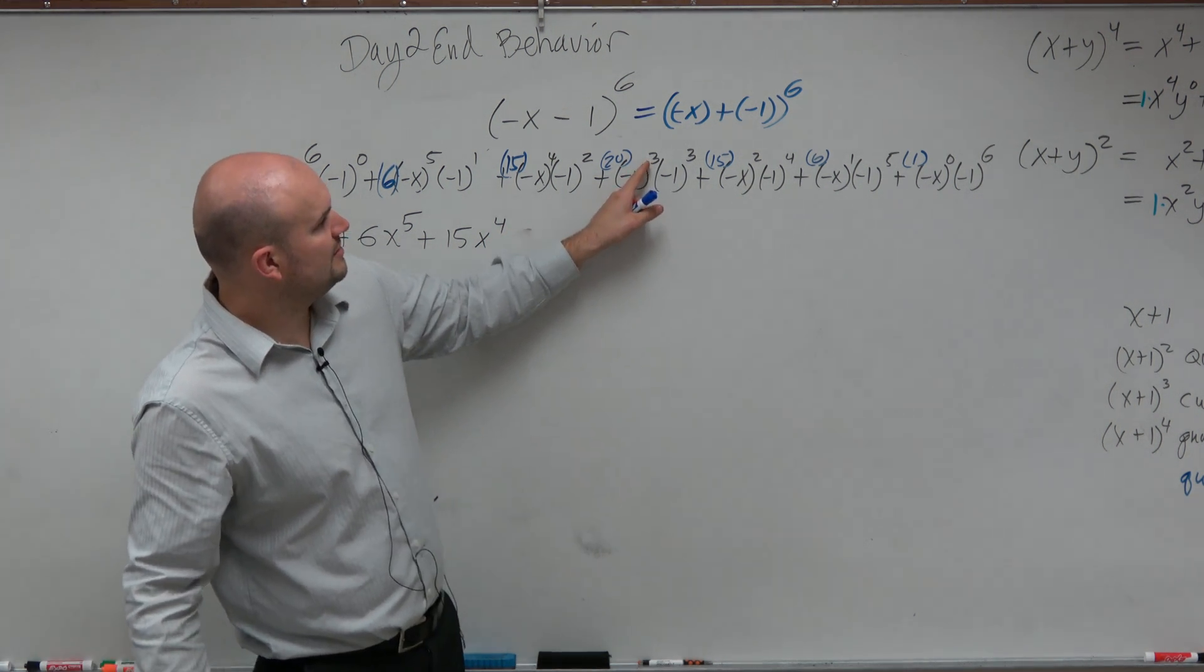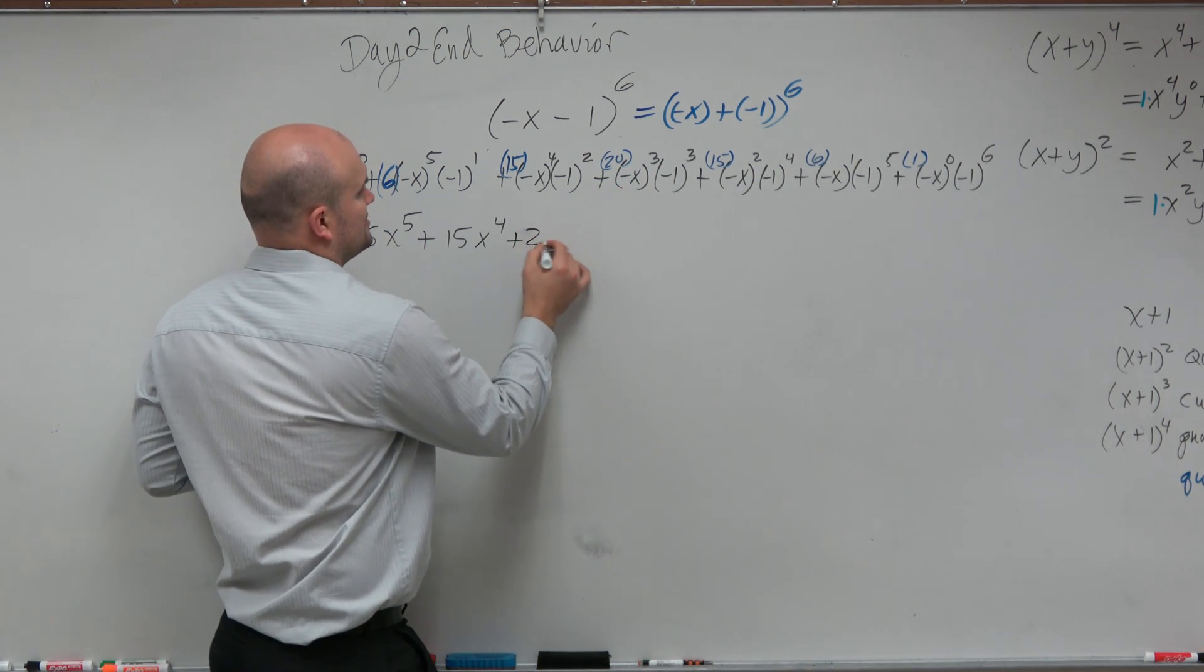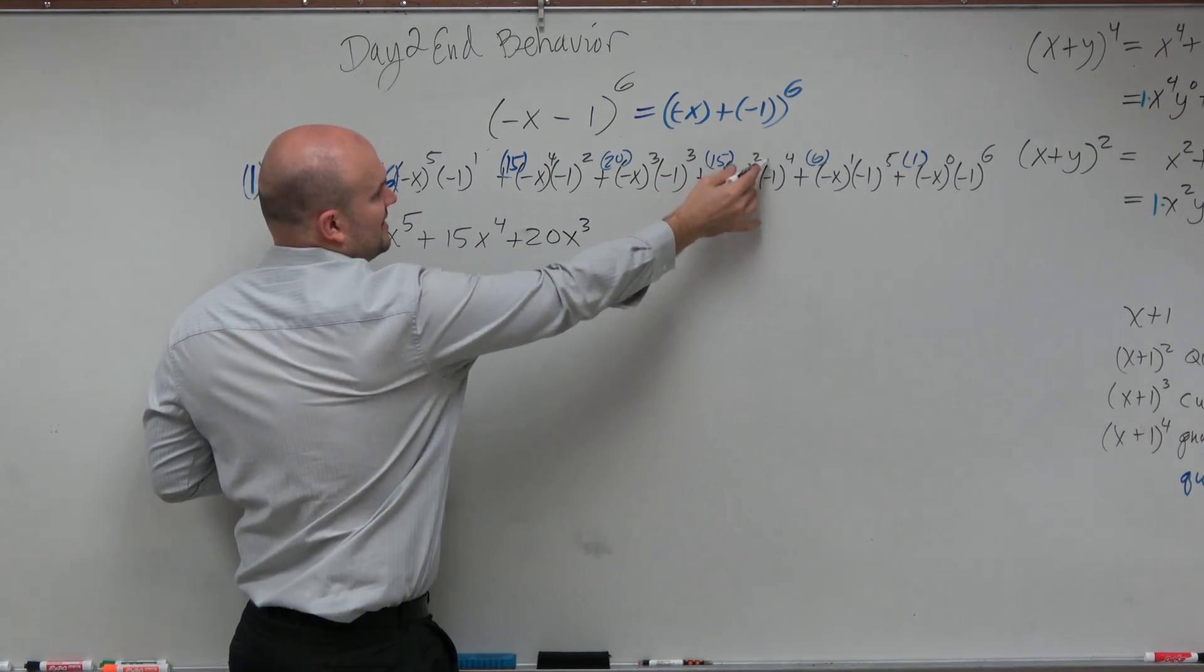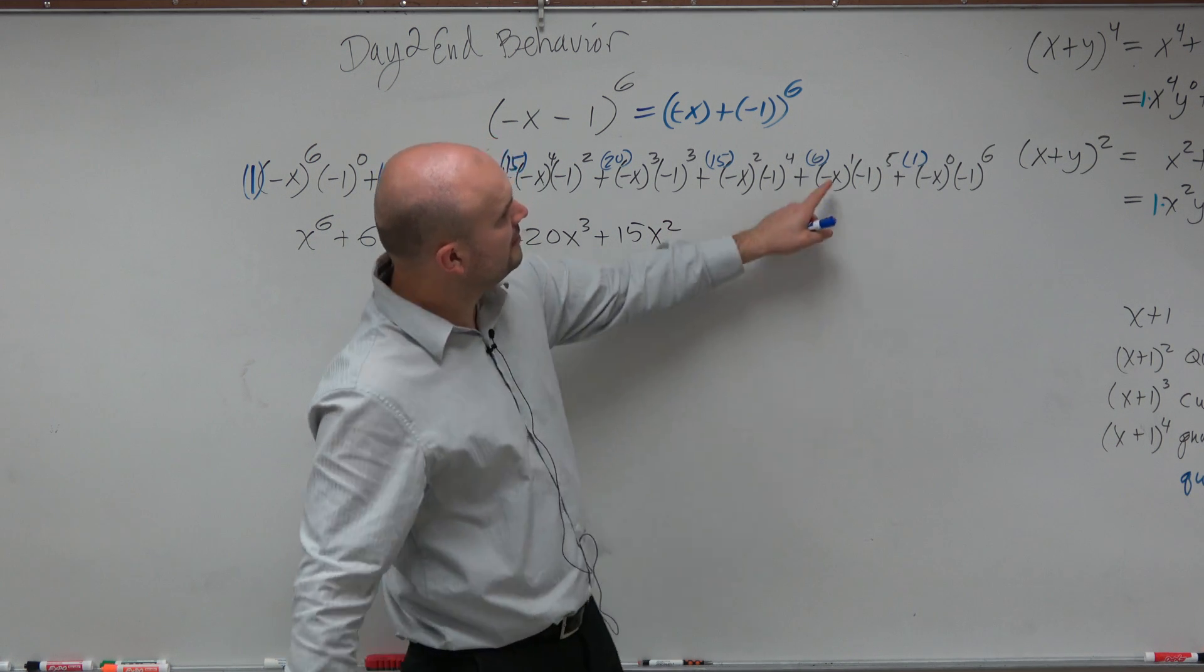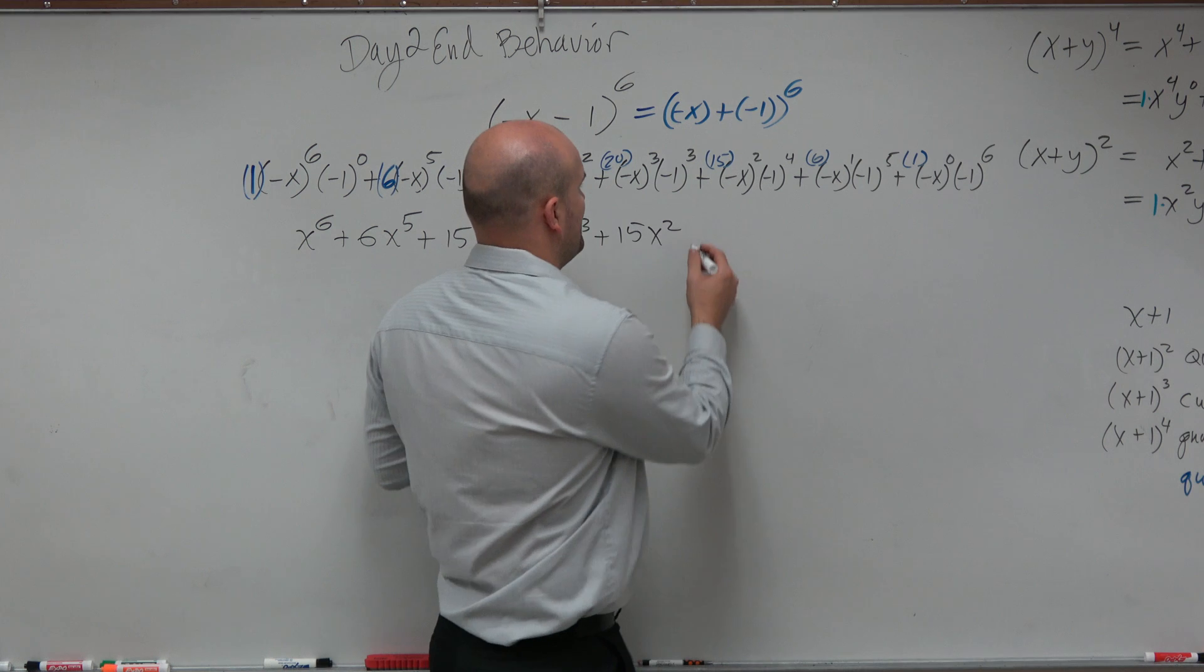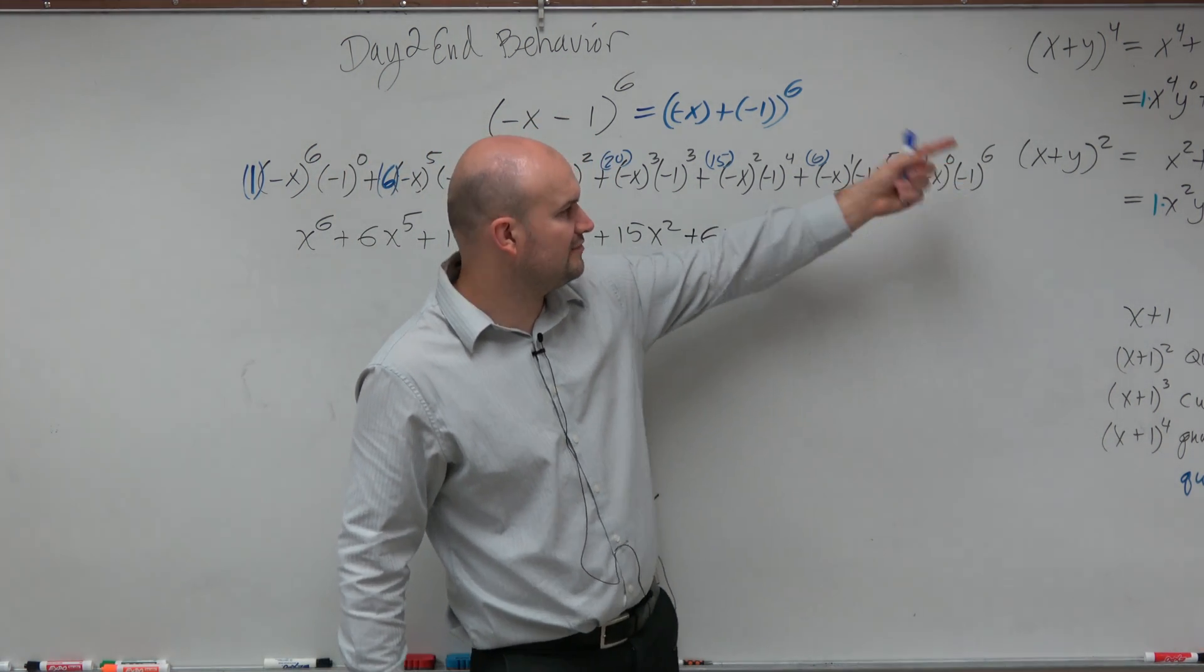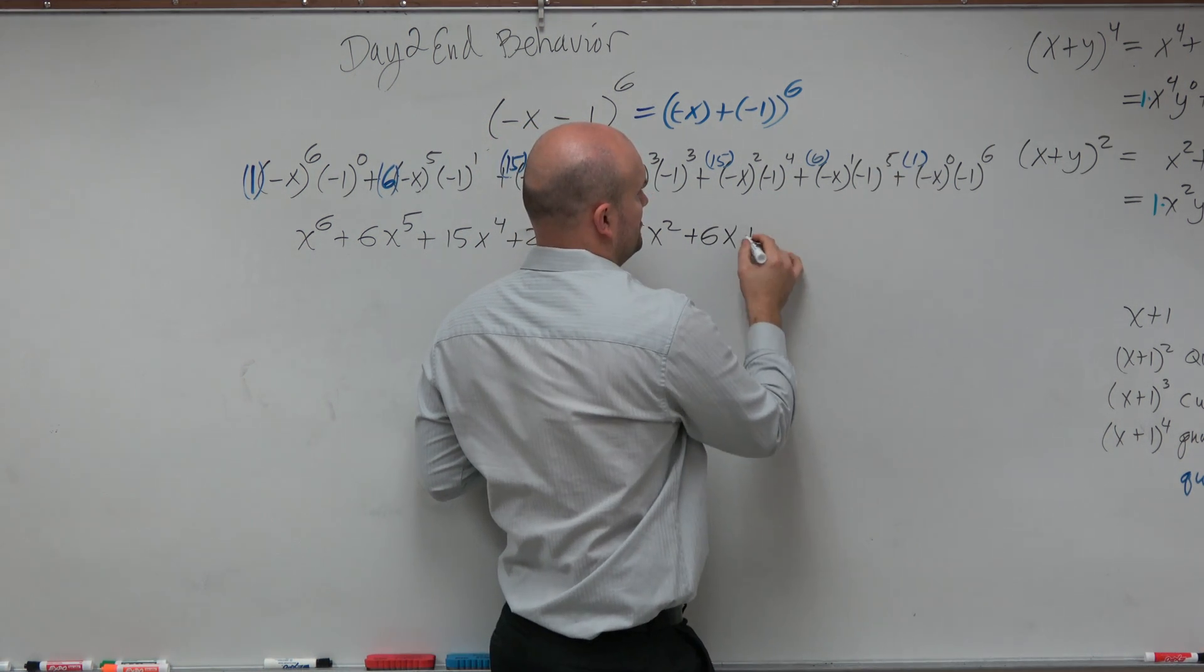This turns into a negative. That's a negative 1. Negative 1 times a negative is a positive. So plus 20x cubed. That's positive. That turns positive. So plus 15x squared. That's a negative. That's a negative 1. Negative 1 times negative is a positive 6x. And then that goes to 1. And negative 1 to the 6th power is plus 1. And that's times 1. So plus 1.